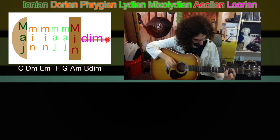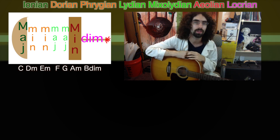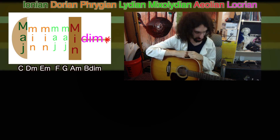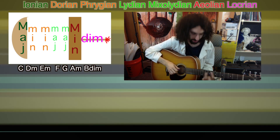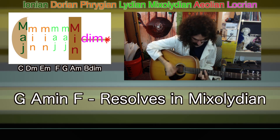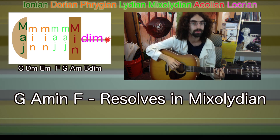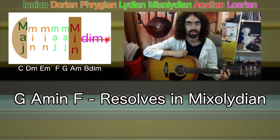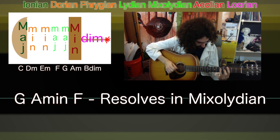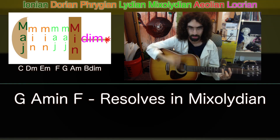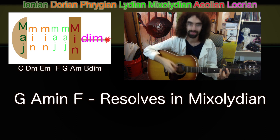Resetting your ears again. [plays] Now for G Mixolydian — the fifth mode of the key of C. We start on a G major chord, which is the V chord, go up to its neighbor A minor, down to its neighbor F, and back to G. [plays] That's a nice Mixolydian sound — major, up a whole step to minor, down to its major neighbor, and back to our original G major chord.